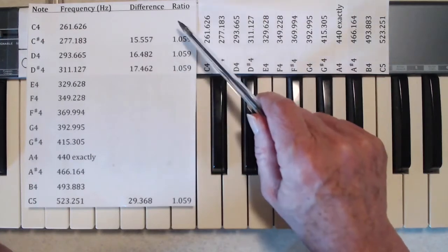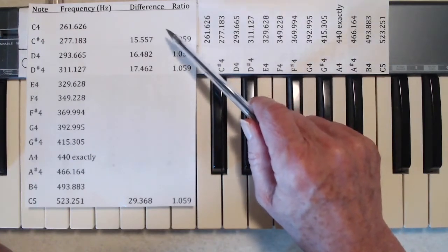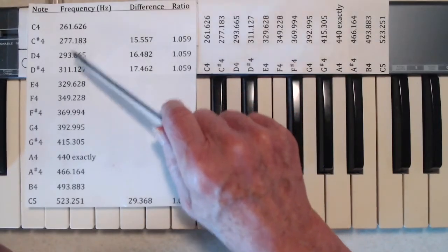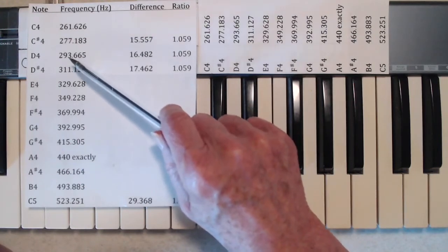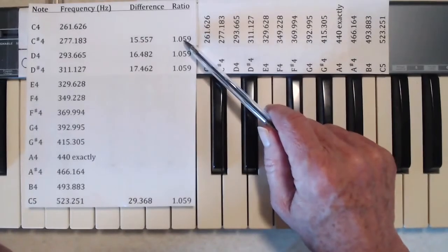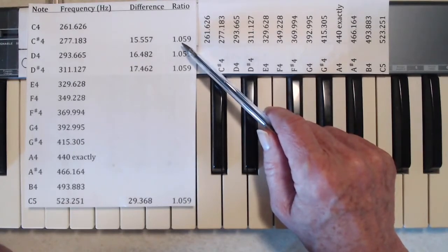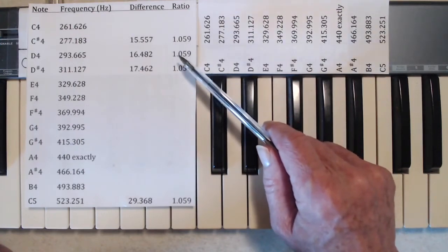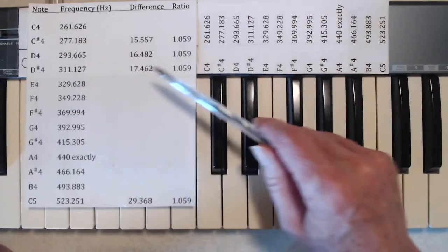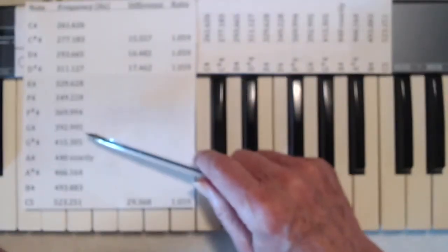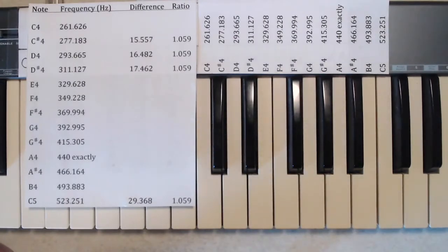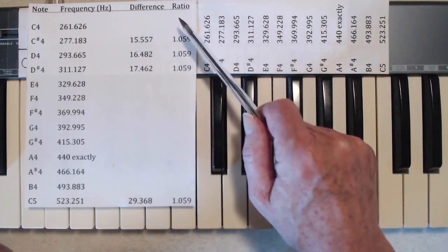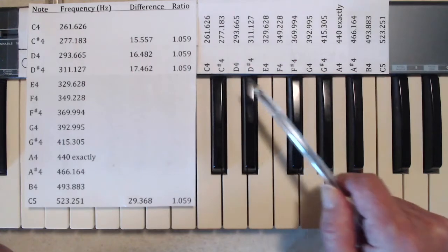But if you look at the ratio, in other words, if you divide this number by this number, and so on, this number by this number, this number by this number, you find that the ratio is always the same. In fact, it comes out to be 1.059. So the ratio of the frequencies of any two successive notes remains the same as we move up. That's what we mean by equal temperament. It's not the difference in the frequencies. It's the frequency ratios that are the same as we move up through the notes.